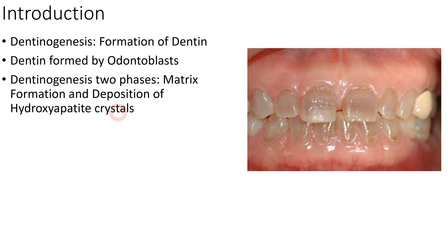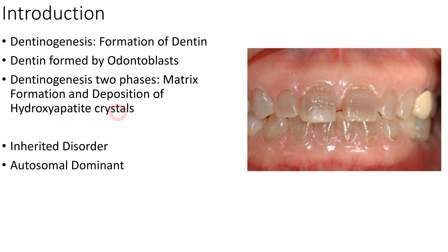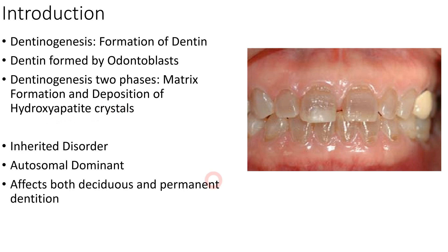There are certain inherited disorders which can lead to diseases of dentine. Dentinogenesis imperfecta is one such inherited disorder — it is an autosomal dominant disorder and it can affect both deciduous and permanent dentition. As you can see in this clinical picture, these teeth have a yellowish, brownish, or grayish appearance throughout.